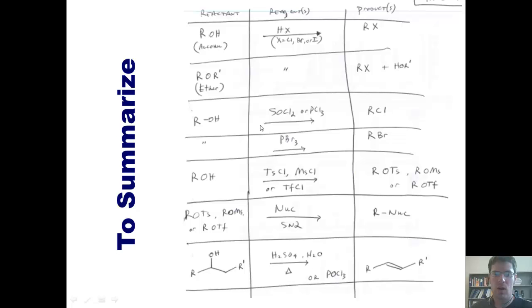Separately, if I treat an alcohol with SOCl2 or a phosphorus trichloride, I will replace the OH with a chlorine. If I treat an alcohol with PBr3, I can replace the OH with a bromide. If I treat an alcohol with tosyl chloride, mesyl chloride, or triflyl chloride and pyridine, which I forgot to write here, I will convert the ROH into an ROTs, an ROMs, or an ROTf. Why in the world would I ever want to make these? The reason is because they are much better leaving groups than an OH.